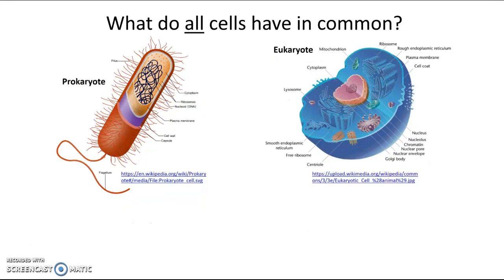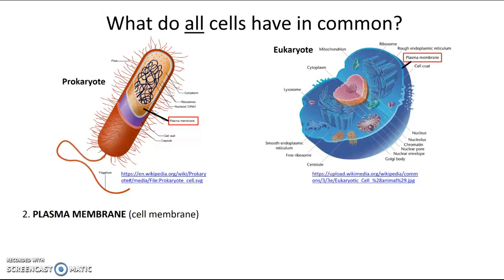In this prokaryote, the cytoplasm is just pointing to the liquid inside the cell. Over here for our eukaryotic cell, it's going to be the liquid in the cell plus all the other stuff suspended in it, except for the nucleus. What else do all cells have in common? Going back to the idea of your cells being bags of goo — we've got the goo, but what about the bag? Something around the outside of the cell — and that is the plasma membrane, also called the cell membrane. In both the prokaryotic and eukaryotic cells, it's just a layer of stuff around the cell — the bag that holds everything in.